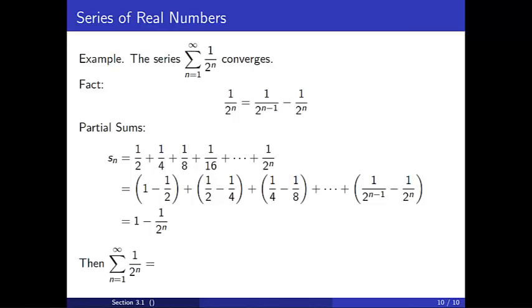The sum of the series is equal to the limit of the partial sums. And since 1 over 2^n converges to 0 as n approaches infinity, the sum of the series is 1.